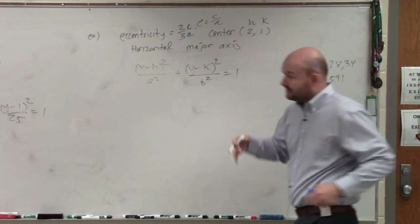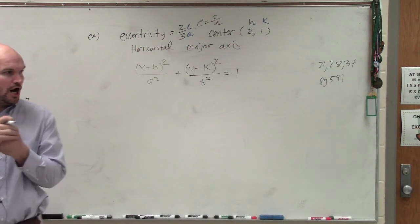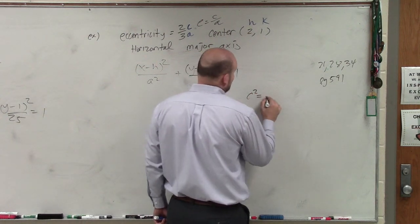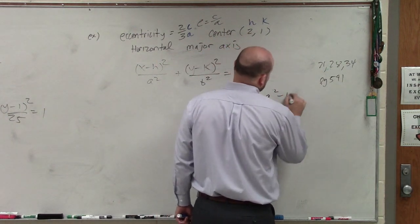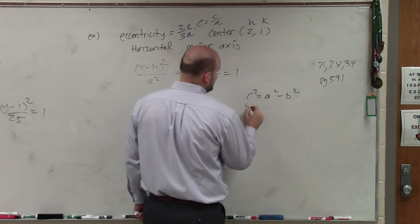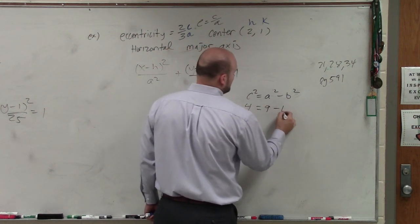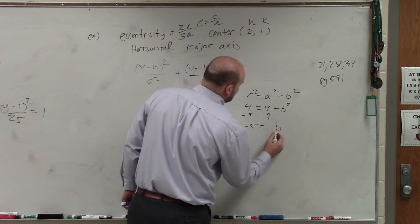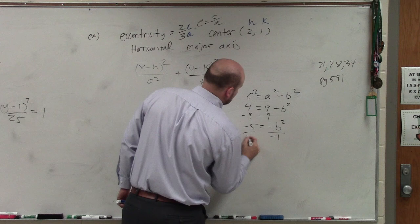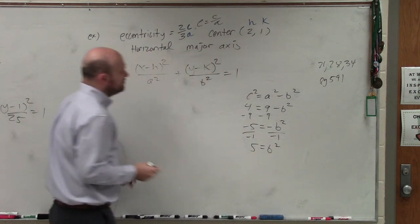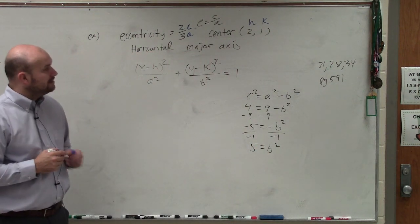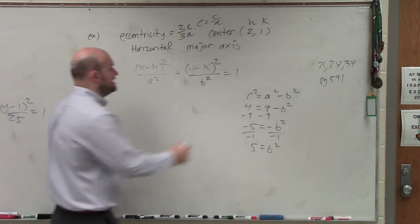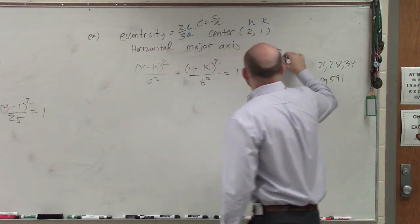So that's our equation. The only thing we need to make sure we know is our B. We go to our formula: C squared equals A squared minus B squared. C squared is 4, equals A squared which is 9, minus B squared — so 5 equals B squared. I have my H and my K, I have my B squared. My A is 3, so A squared is equal to 9.